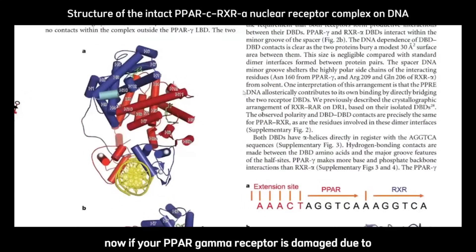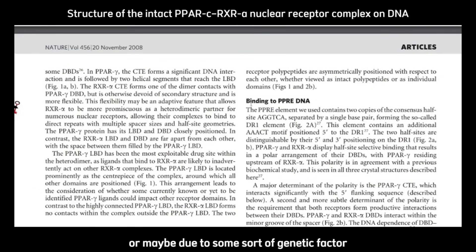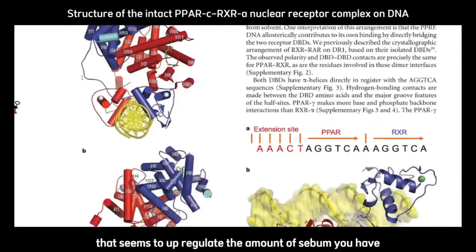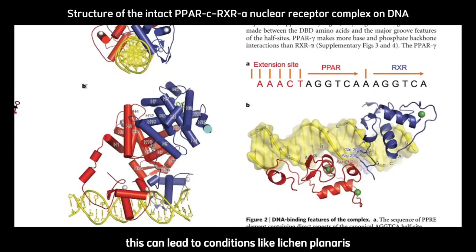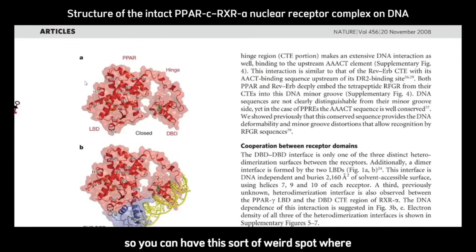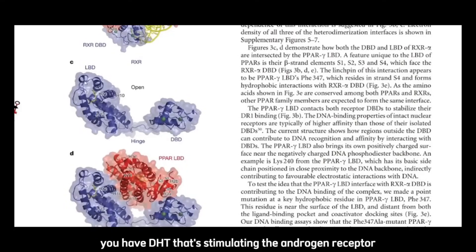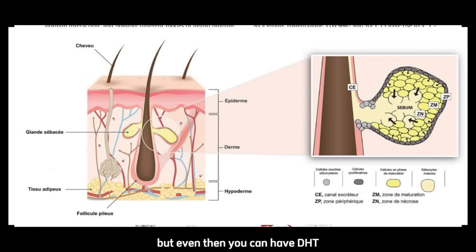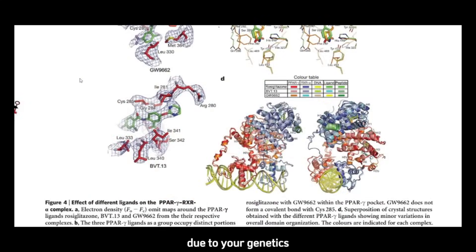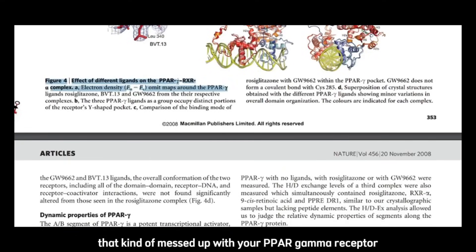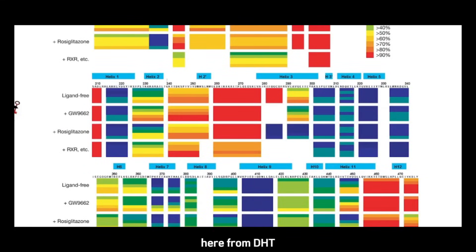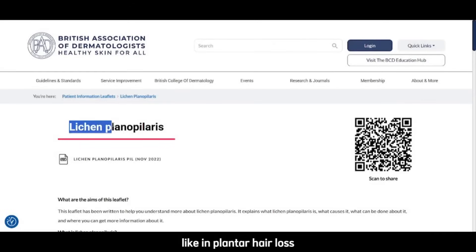Now, if your PPAR gamma receptor is damaged — due to something environmental, a genetic factor, or simply too much sebum from DHT interacting with your sebaceous glands and upregulating sebum production — this can lead to conditions like lichen planopilaris. So you can have this weird overlap where DHT stimulates the androgen receptor and causes hair follicle miniaturization, but you can also have DHT increasing oil output from your sebaceous glands such that if you have an underactive PPAR gamma receptor due to genetics or an environmental toxin, this can also cause hair loss in its own right. The excessive oil production from DHT interacting with the sebaceous glands can also cause lichen planopilaris.